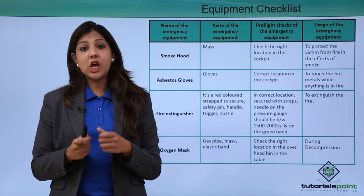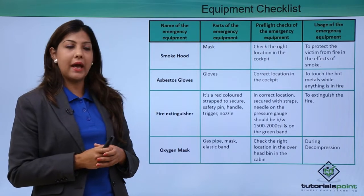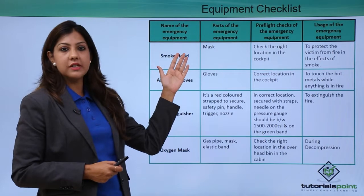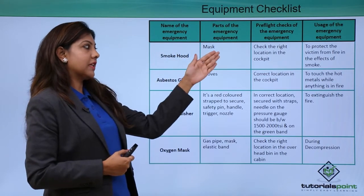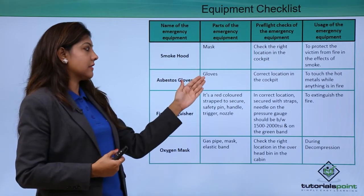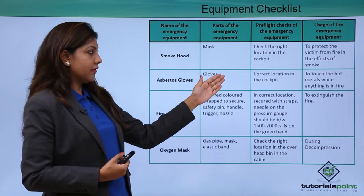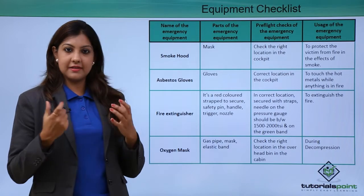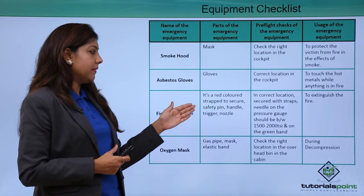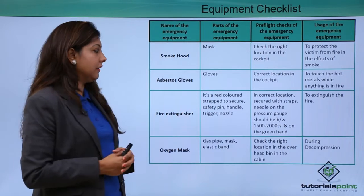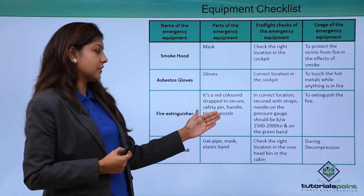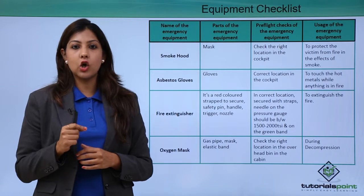Let's look at the equipment checklist on board. The smoke hood is located in the cockpit to protect from fire and smoke effects. Asbestos gloves are also located in the cockpit area, used to touch hot metals in a fire situation. The fire extinguisher is a red bottle strapped with a safety pin, handle, trigger, and nozzle. The needle on the pressure gauge must read between 1,500 to 2,000 PSI and must be in the green band, not the red band zone.